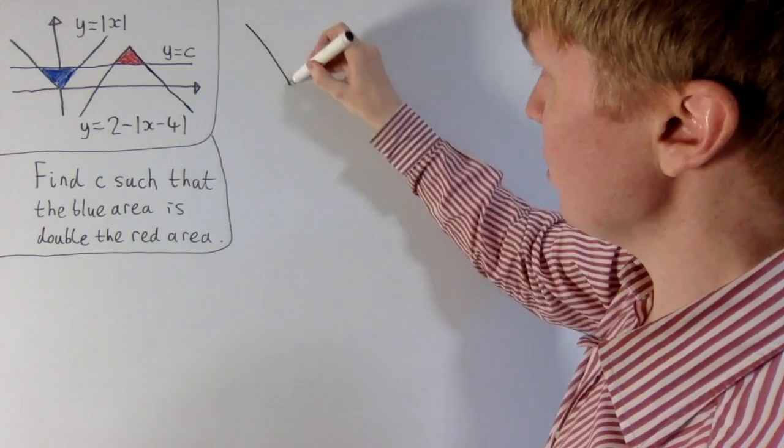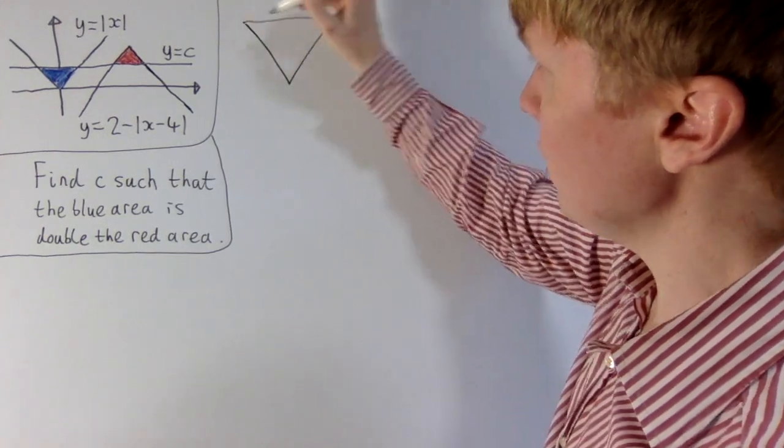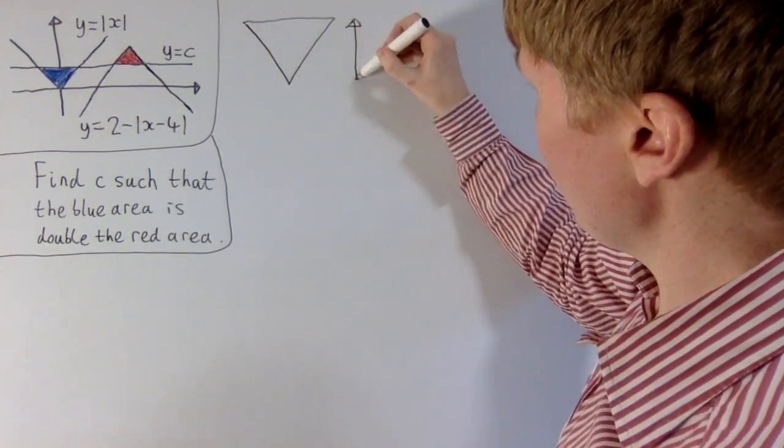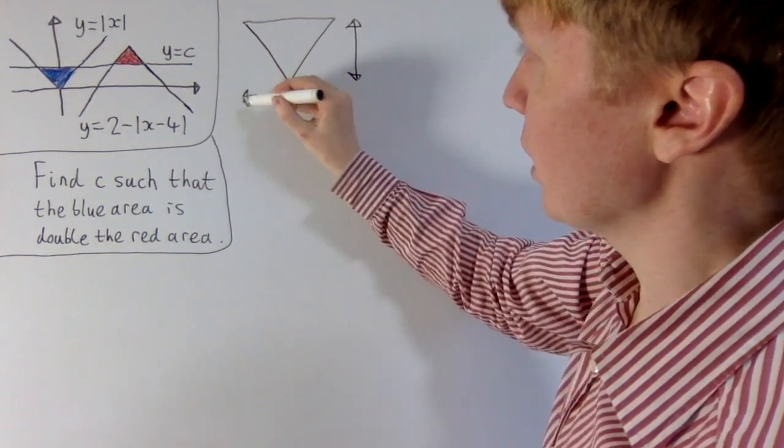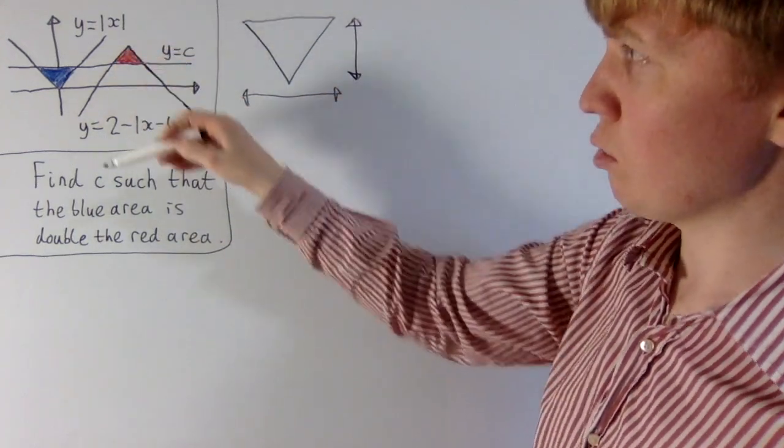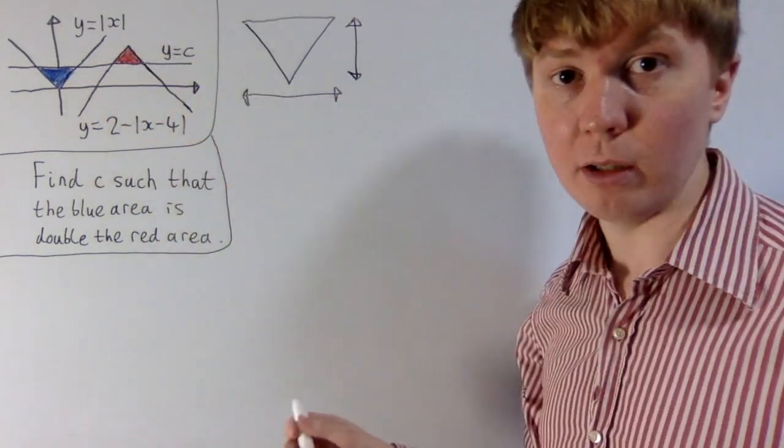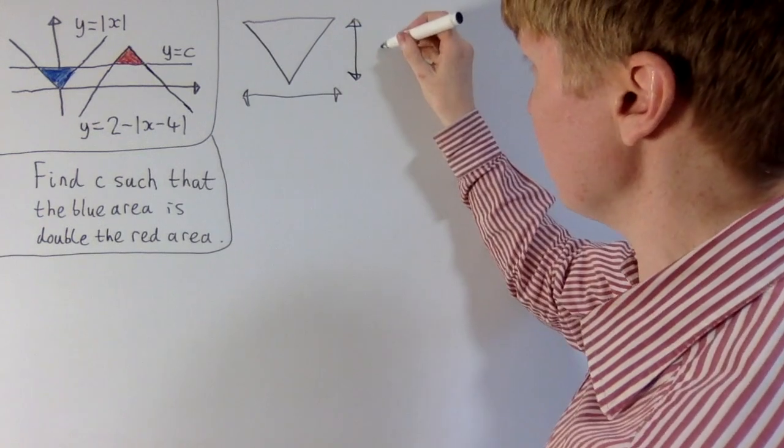So our blue area, let's just have a think about what this triangle looks like. We'll go down the base times height divided by 2 formula to find the area of the triangle. So what is the height of this triangle? Well it's where it meets the line y equals c, so the height of this triangle is actually just c.